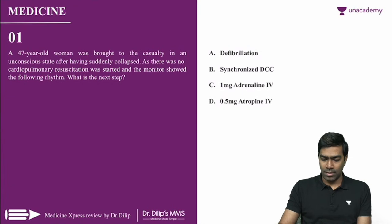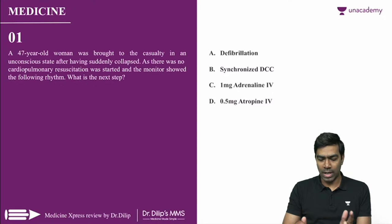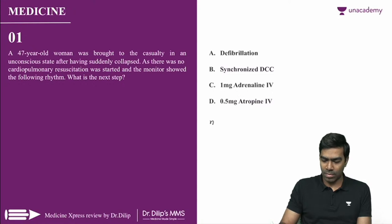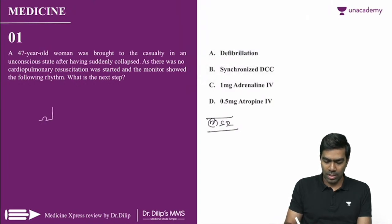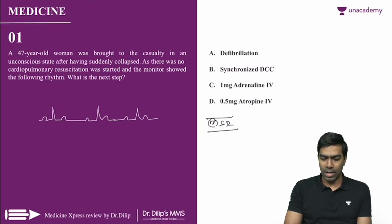Here is your first question. A 47-year-old woman was brought to casualty in an unconscious state after having suddenly collapsed. CPR was started. The monitor showed a normal sinus rhythm. What is the next step? Option A is defibrillation, option B is synchronized DC cardioversion, option C is 1 mg adrenaline IV, and option D is 0.5 mg atropine IV.